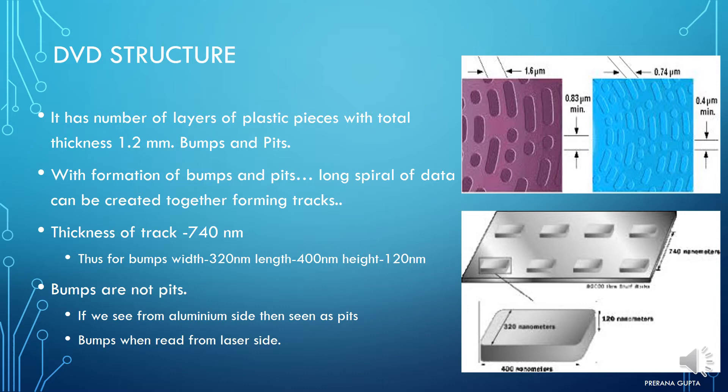The space between CD track and DVD track differs: CD track spacing is 1.6 micrometers while DVD track spacing is 0.74 micrometers. DVD has a total thickness of 1.2 mm with bumps and pits forming a long spiral of data creating the track. The track width is 740 nanometers, bump width is 320 nm, length 400 nm, and height 120 nm.